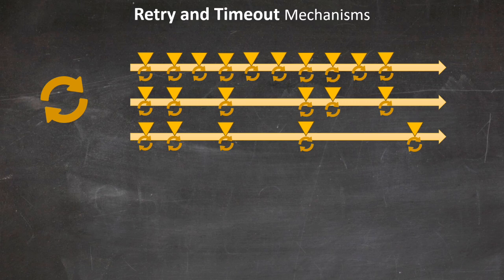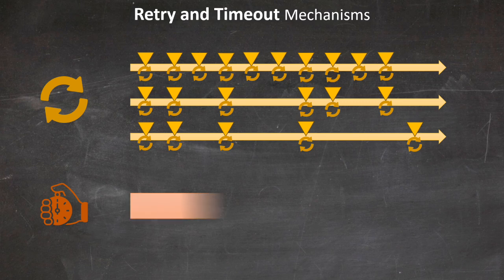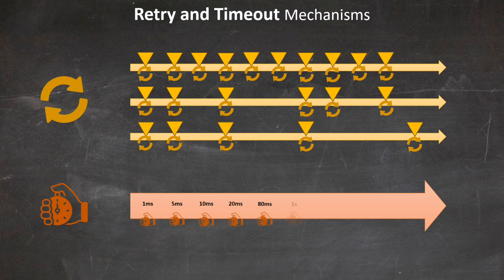Equally important are timeout mechanisms. Every request should have a defined timeout period. If a response isn't received within this time, the request is considered failed, preventing your system from hanging indefinitely on unresponsive services. When implementing timeouts in microservices, it's crucial to set appropriate durations, typically ranging from milliseconds to a few seconds. Timeouts that are too short may lead to unnecessary failures and retries, while excessively long timeouts can tie up resources and degrade overall system performance.